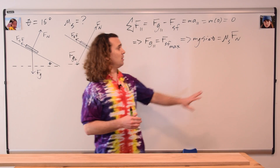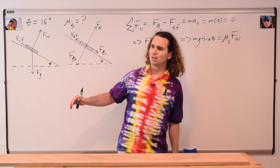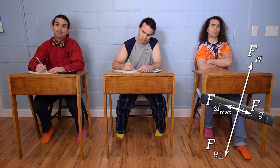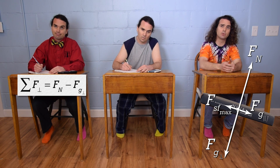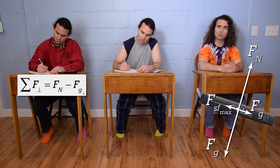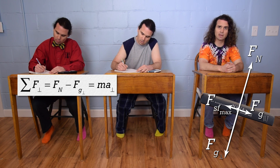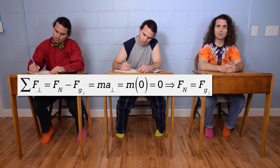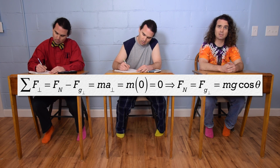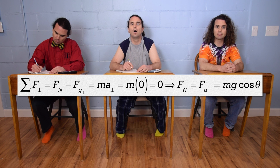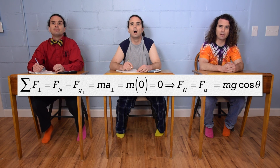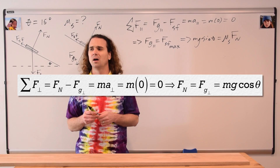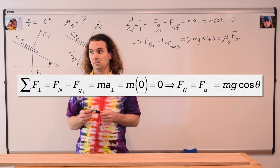Mr. P.: Bo, please solve for the force normal. Bo: The net force in the perpendicular direction equals force normal minus force of gravity perpendicular, which equals mass times acceleration perpendicular. Acceleration in all directions is zero, so force normal equals force of gravity perpendicular, which equals mass times acceleration due to gravity times cosine θ. Student: Pretty much equals force of gravity — it's just force of gravity perpendicular instead.